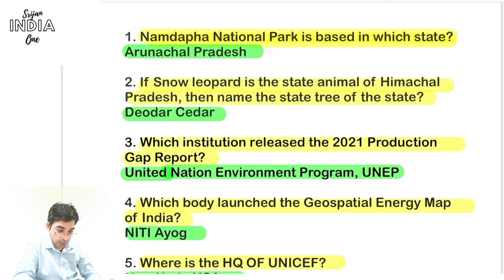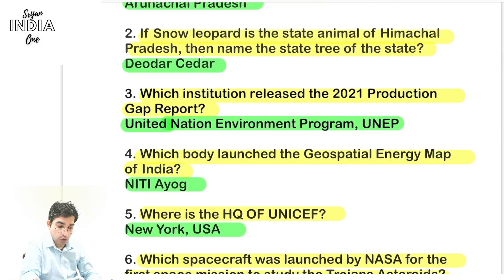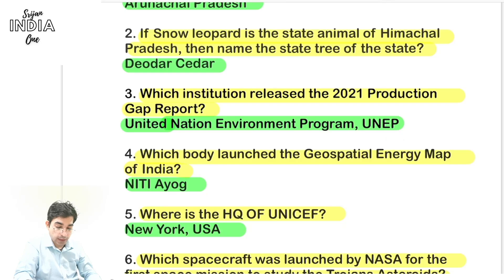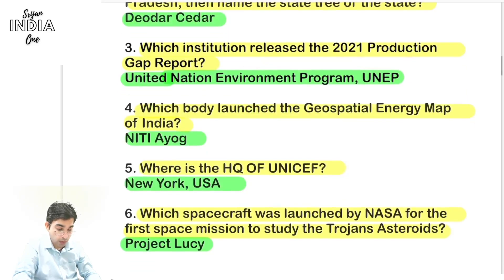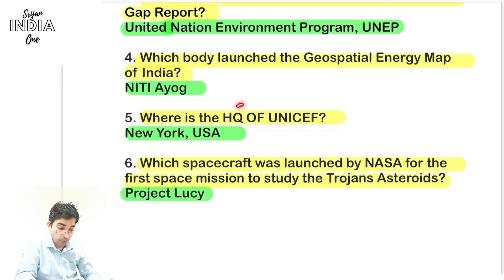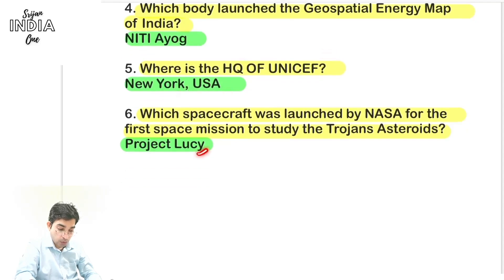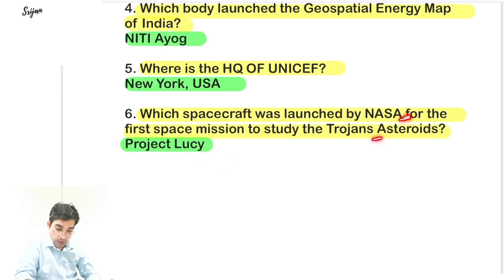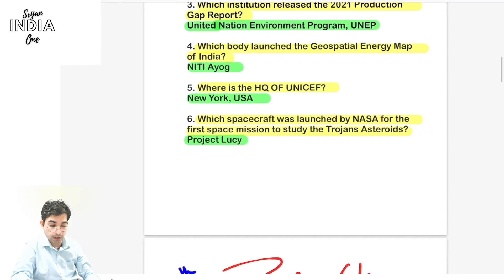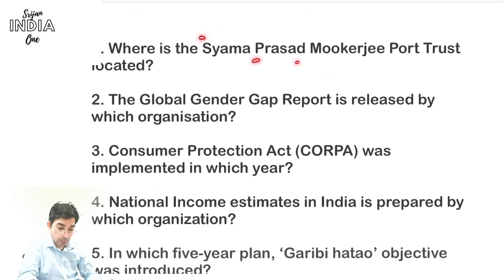Rapid GK — yesterday's question answers: Namdapha National Park is in Arunachal Pradesh. Deodar/Cedar is the state tree of Himachal Pradesh. Snow Leopard is the state animal. UNEP released the 2021 Production Gap Report. NITI Aayog makes the Geospatial Energy Map of India. Headquarters of UNICEF is in New York, USA. NASA's Lucy mission is to study Trojan asteroids.